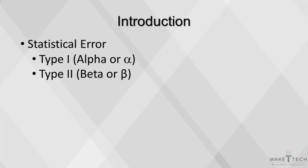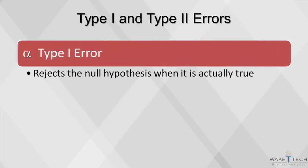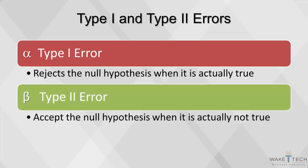This video will cover two types of statistical error: type 1 or alpha, and type 2 or beta. All statistics derived from samples are subject to error. A type 1 error rejects the null hypothesis when it is actually true. A type 2 error accepts the null hypothesis when it is not true.